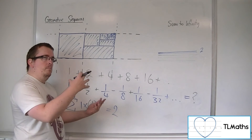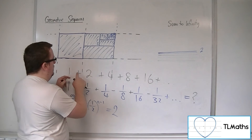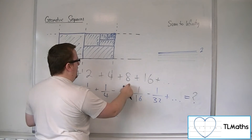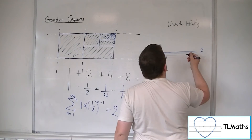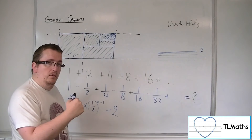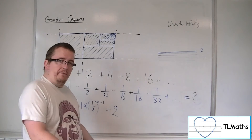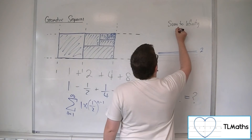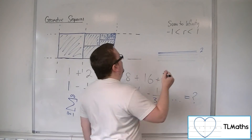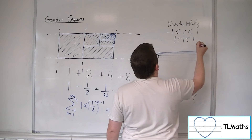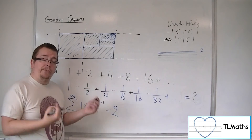If r was less than minus 1, then clearly we would have 1, take 2, plus 4, take 8, plus 16 — that doesn't make sense to have a sum to infinity. And if r was 1 or minus 1, then 1 plus 1 plus 1 plus 1 is not going to have a sum to infinity either. So r must be between minus 1 and 1, and we write that as the modulus of r being less than 1. These two statements are synonymous — they mean precisely the same thing.